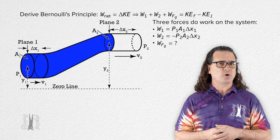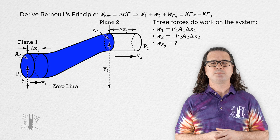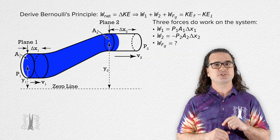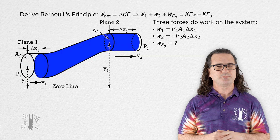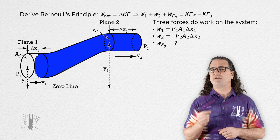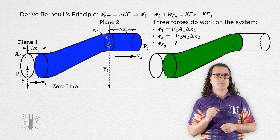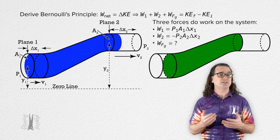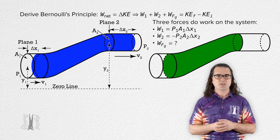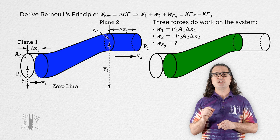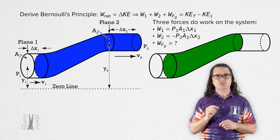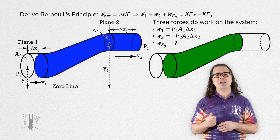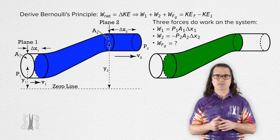Let's determine the work done by the force of gravity on our volume of fluid. Start by watching our volume of fluid flow from the initial configuration to the final configuration of the system. First off, realize the volume of the fluid in the curved section of pipe, which I have made green in our illustration, does not change between the initial and final configurations of the system. You can see that when we look at the volume of fluid in blue flowing to the right — the volume of the fluid in the curved section of the pipe does not change its vertical height above the horizontal zero line.